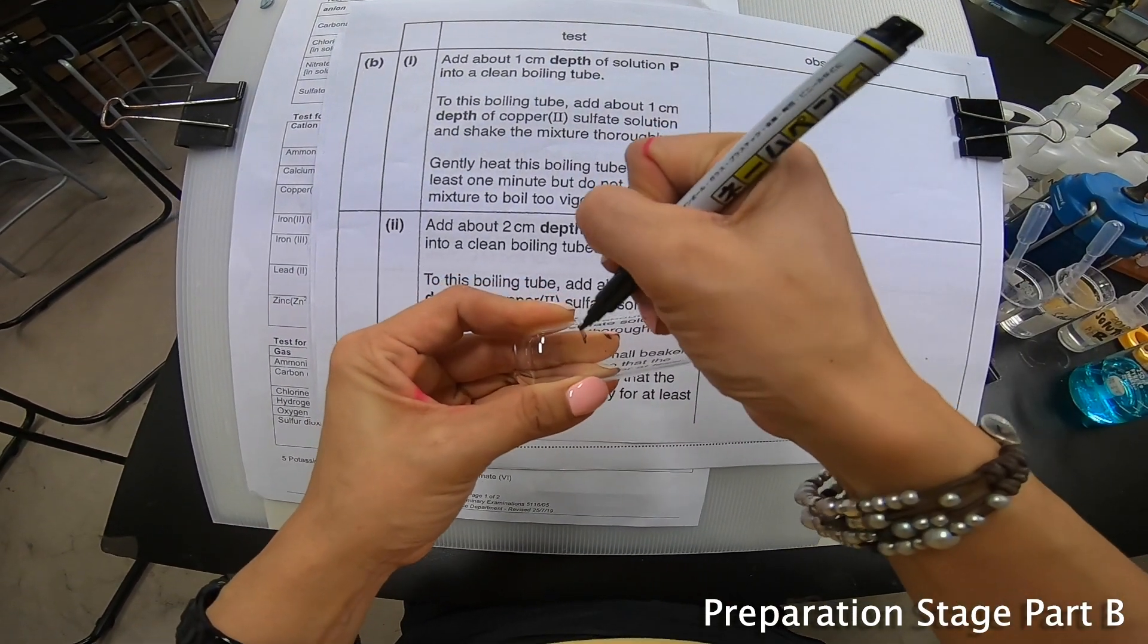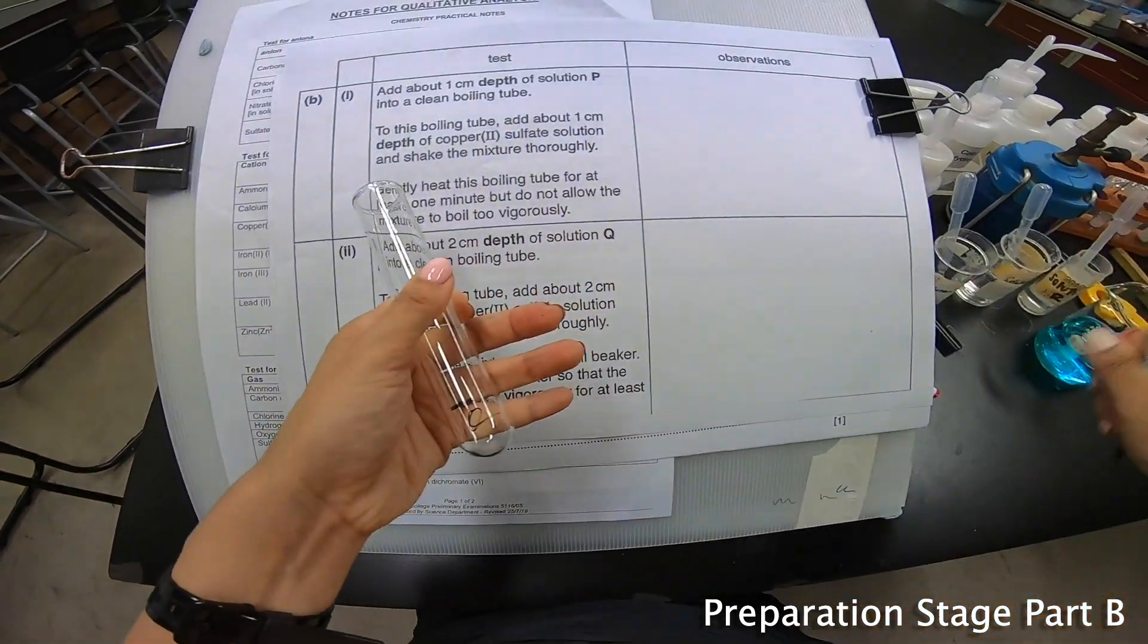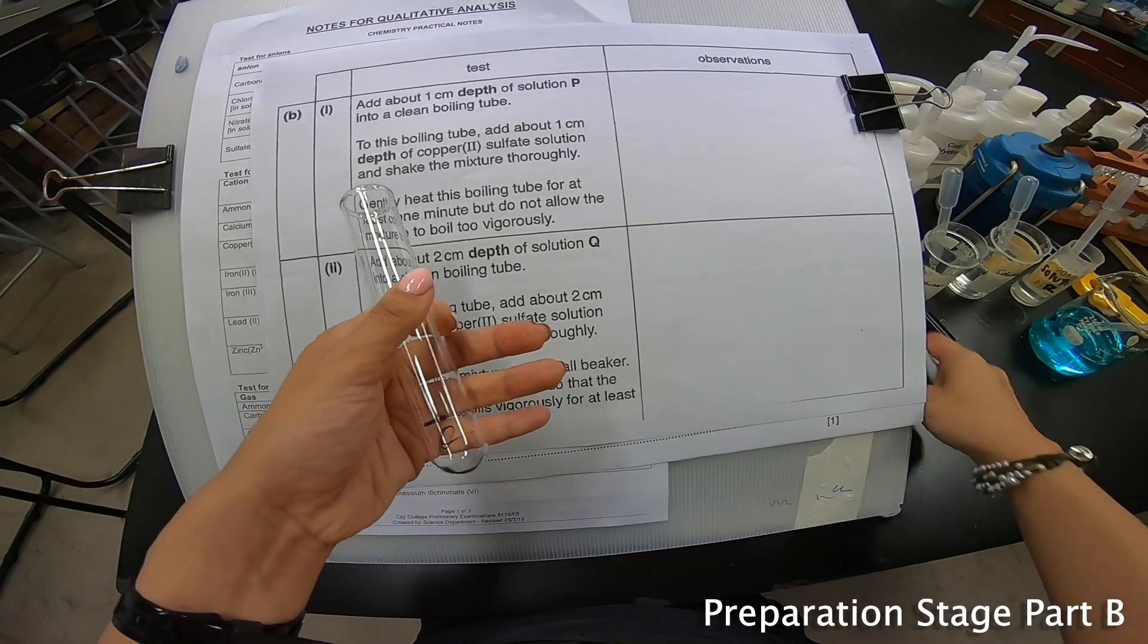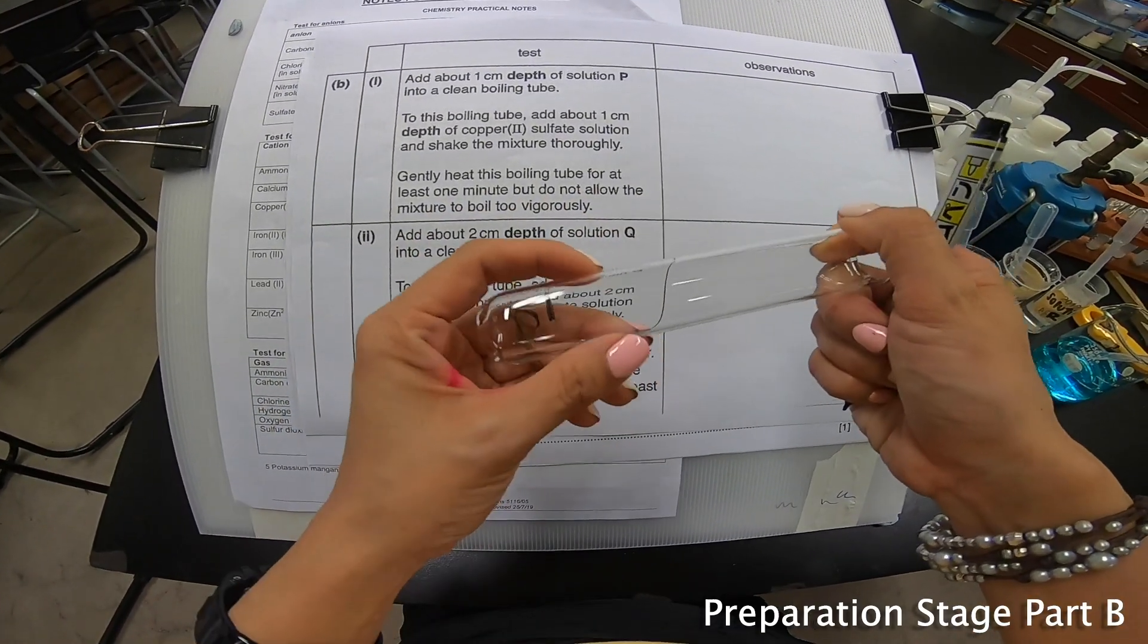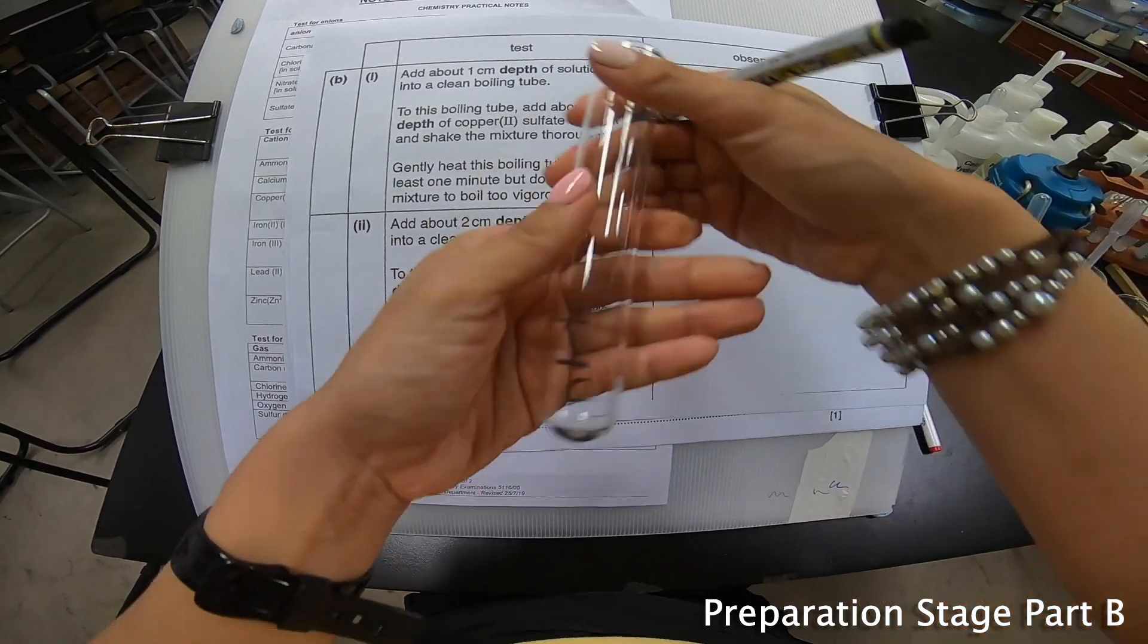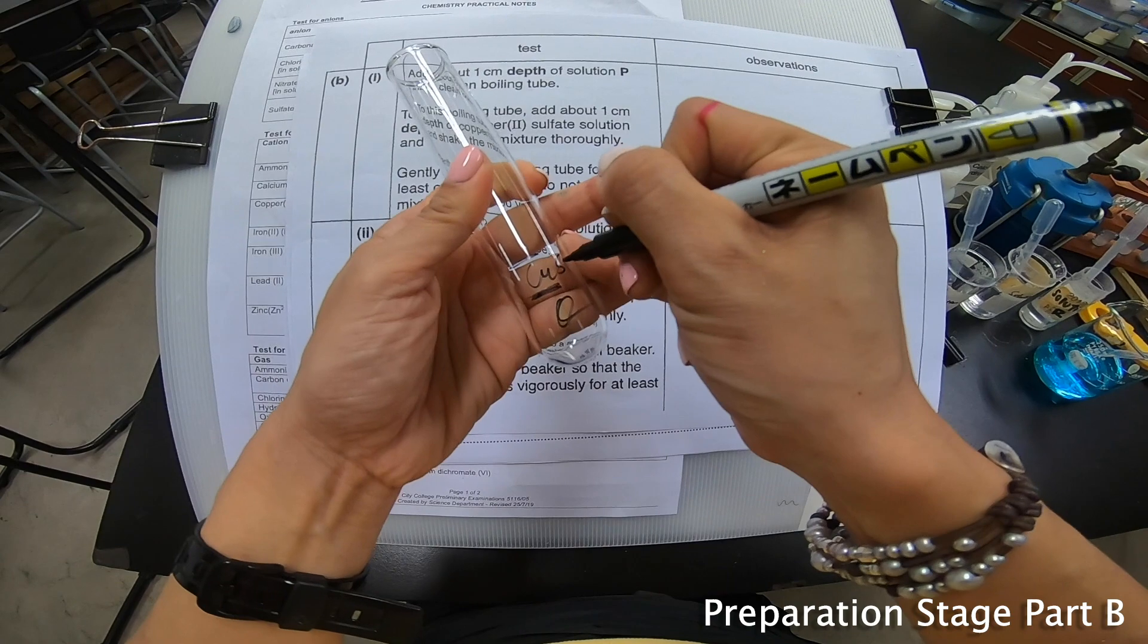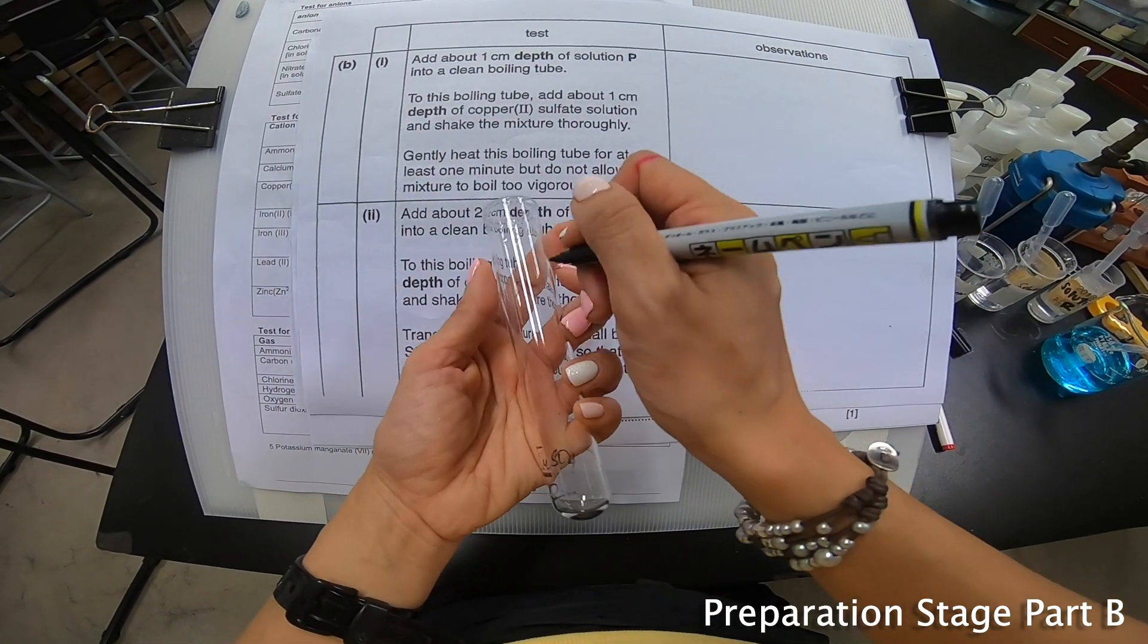And this is Q. Let me write this down. And then I'm supposed to add another 2 cm depth of CuSO4. So this is CuSO4. Now this part here is B part 2.